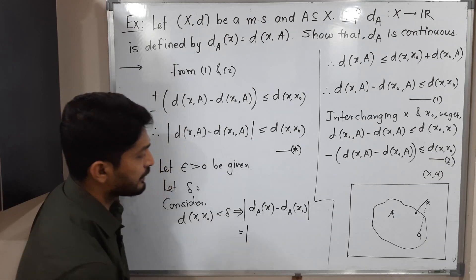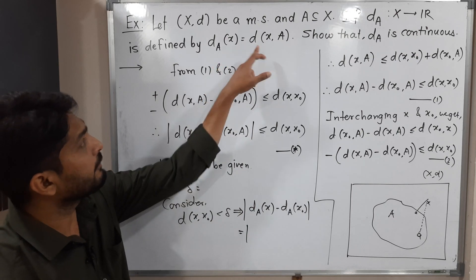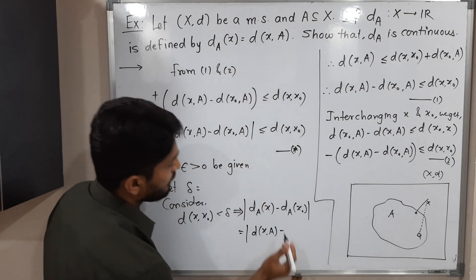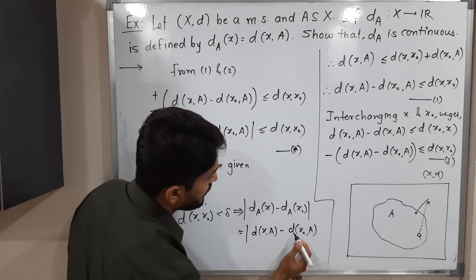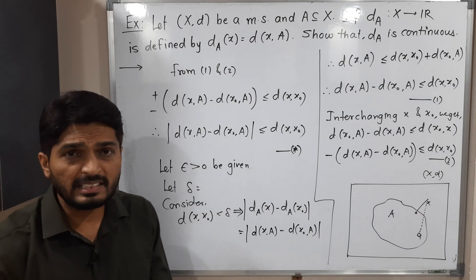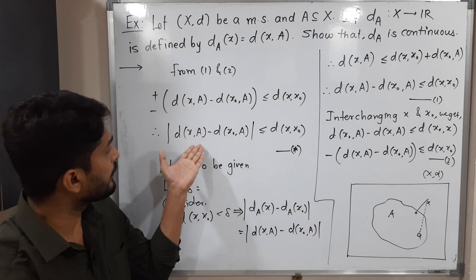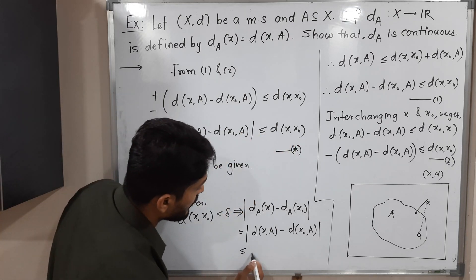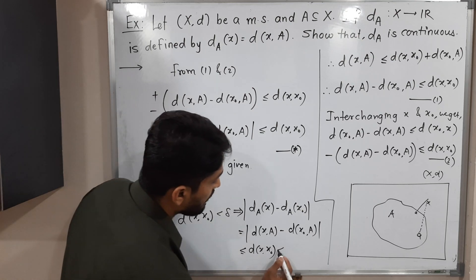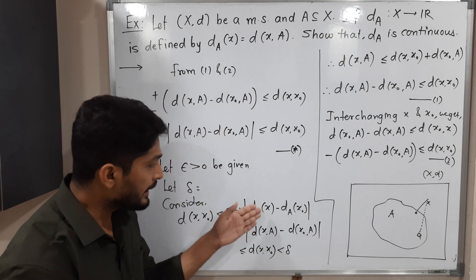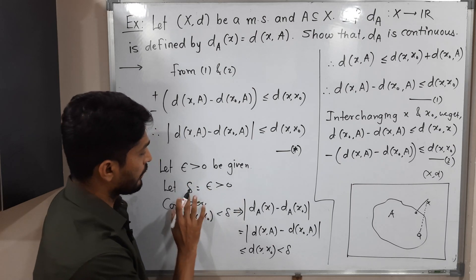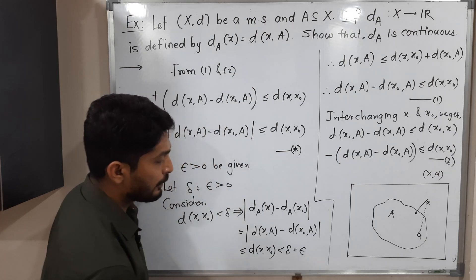By definition, d_A(x) = inf_{a∈A} d(x, a) and d_A(x₀) = inf_{a∈A} d(x₀, a). So |d_A(x) − d_A(x₀)| equals |d(x,a) − d(x₀,a)| in the infimum sense. By our starred inequality (★), this is ≤ d(x, x₀) < δ. Our target is to show this is less than ε, and since we got it is less than δ, we choose δ = ε.